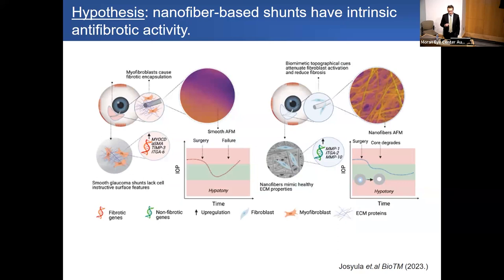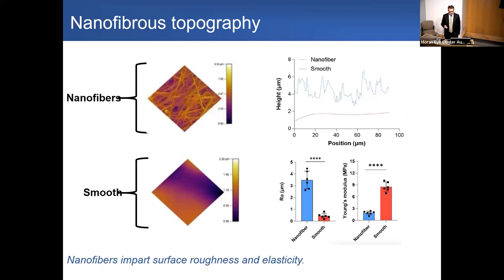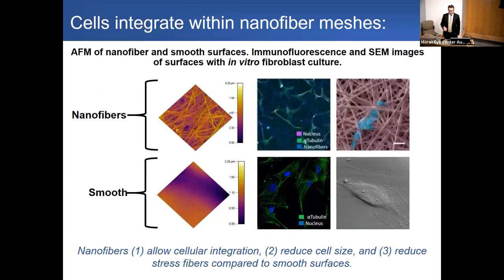His hypothesis was that the topography of our electrospun shunt mimicked the natural cell environment and therefore maintained fibroblasts in a dormant state. He hypothesized that making the same shunt with a smooth exterior would eliminate its antifibrotic effect. We first characterized our surfaces using atomic force microscopy, showing that smooth shunts were smooth while the outer surface of our electrospun shunts had topography on the micron scale. The nanofiber surfaces were also somewhat softer than smooth surfaces, as shown by Young's modulus measurements.